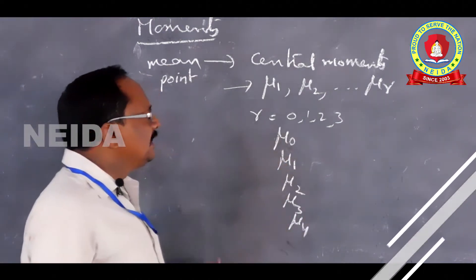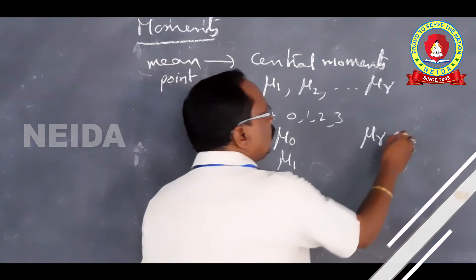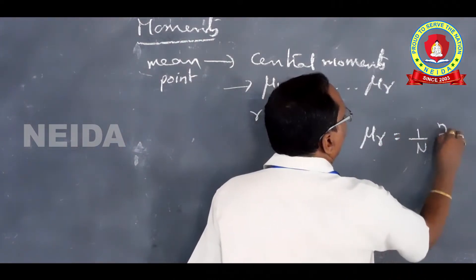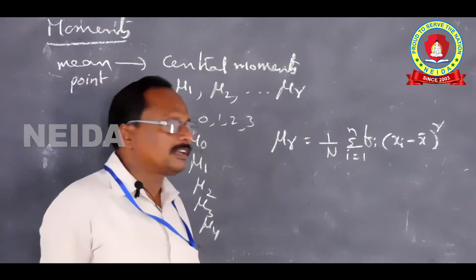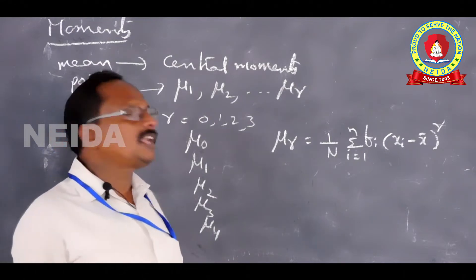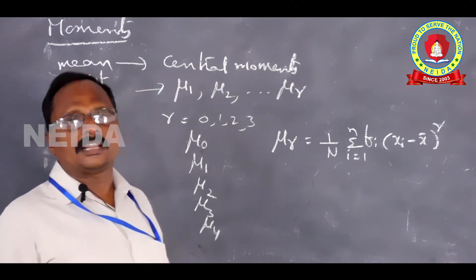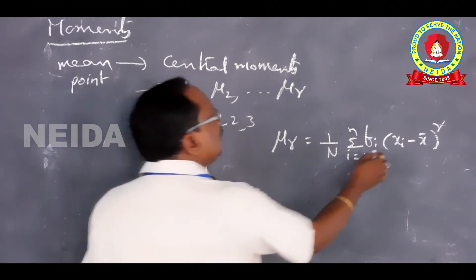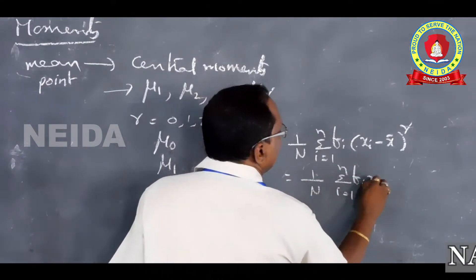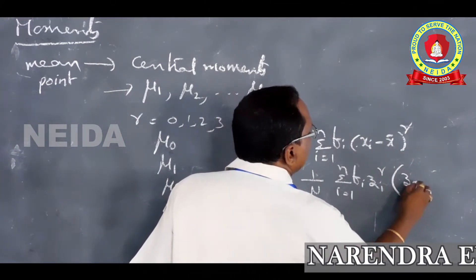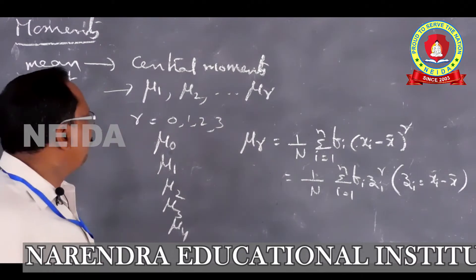Now we give the formula for central moments: μᵣ = (1/n) Σᵢ₌₁ⁿ fᵢ(xᵢ − x̄)ʳ. This is the formula for calculating the rth moment of a variable x about the mean x̄. If we let zᵢ = xᵢ − x̄, this becomes (1/n) Σ fᵢ · zᵢʳ. This is the general formula used for calculating central moments.